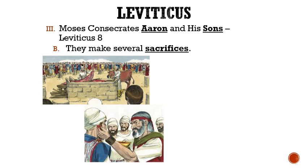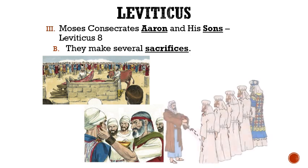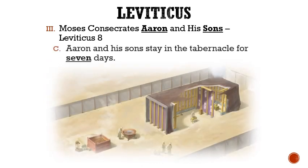The Jewish people teach that this was because of the symbolism of listening to God with your ear, worshiping God with your hands, and walking after God with your feet. Then finally, blood was sprinkled on all of their garments. Letter C: Aaron and his sons stay in the tabernacle for seven days. They were told to stay in the tabernacle for this long, or they would die.